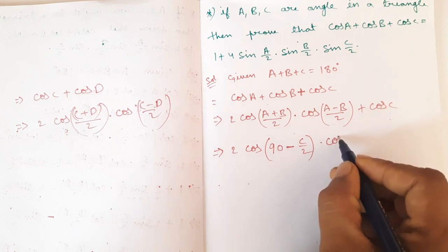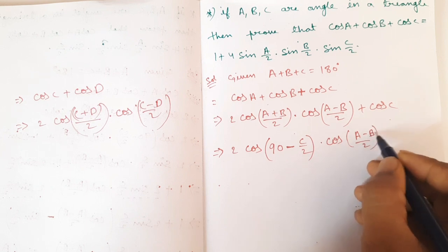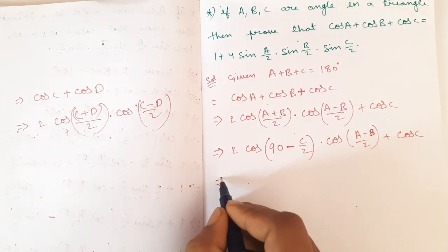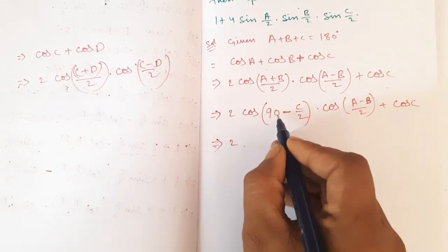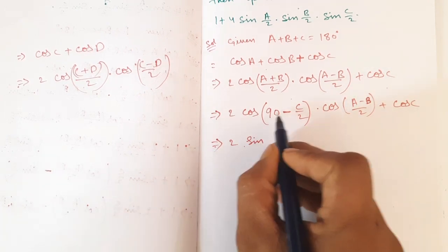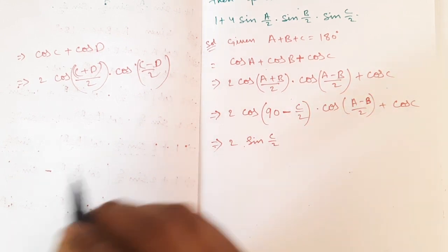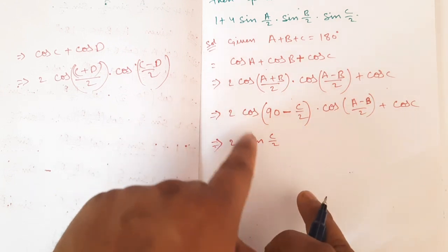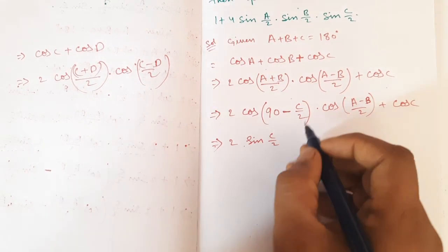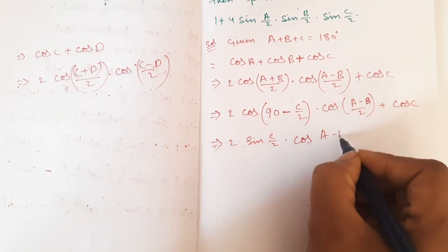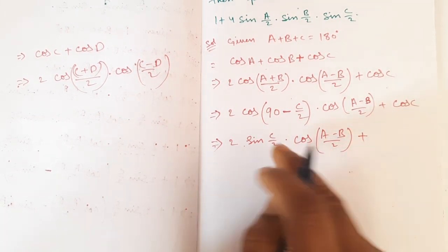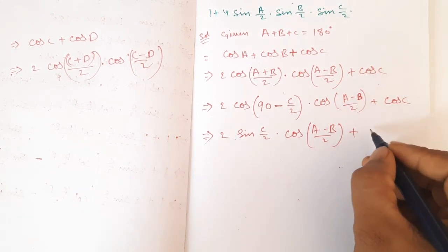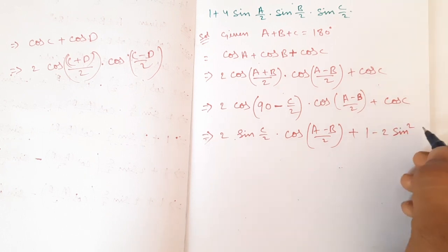cos(90 − C/2) equals sin(C/2), times cos((A−B)/2). And for cos C, we use the formula: cos C equals 1 minus 2·sin²(C/2).